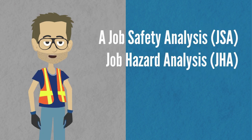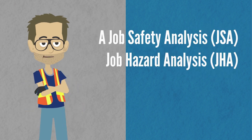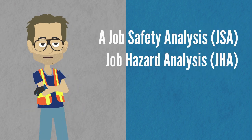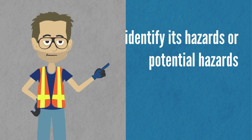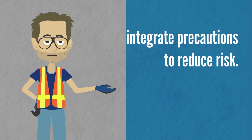A job safety analysis, also known as a job hazard analysis, is a systematic approach to prioritize and select a job or job task, identify its hazards or potential hazards, and integrate precautions to reduce the risk.